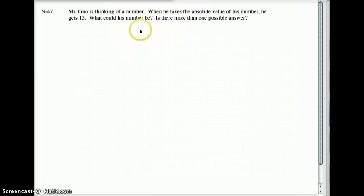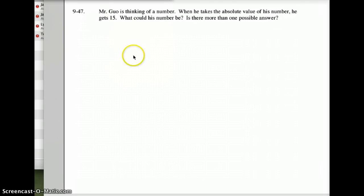Number 47, Mr. Guo is thinking of a number. When he takes the absolute value of the number, he gets 15. So I want to think about this one for a second. I'm going to slide this over just for a moment here. We're taking the absolute value, so the ABS, of some number. We'll call that number X. And that number equals 15. So the question becomes, what is that number?